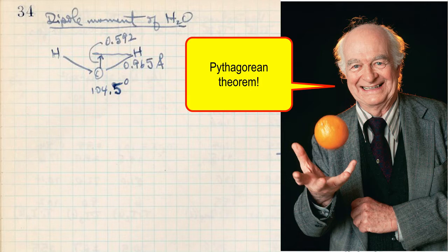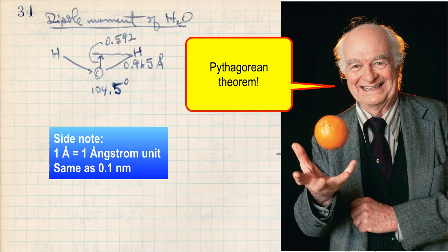As a side note, his notation used a capital A with a little circle over the top — that's the symbol for the angstrom unit, which is the same as a tenth of a nanometer. Some physicists use angstroms for atomic distance measurements, and some use nanometers. Doesn't matter which.